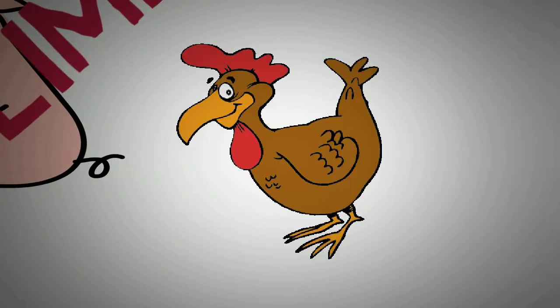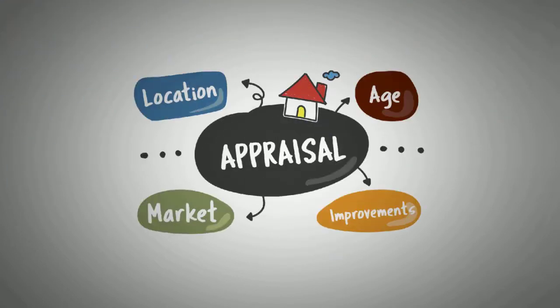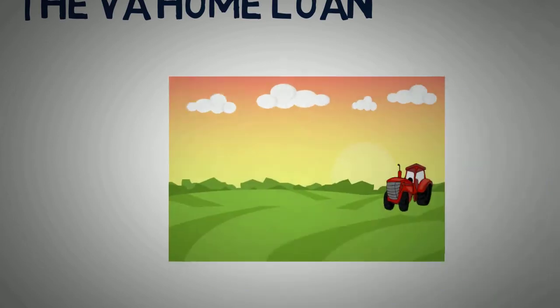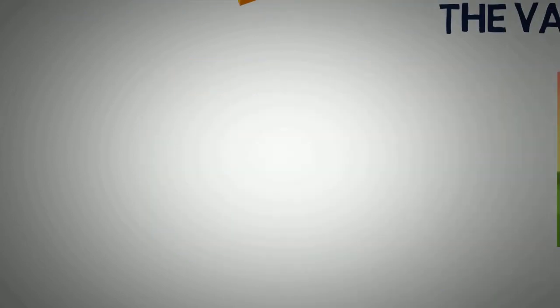The appraisal should include a sufficient number of similar properties in the area. The VA's valuation of the property must not include livestock, crops, or farm equipment and supplies.